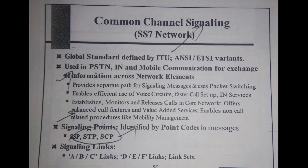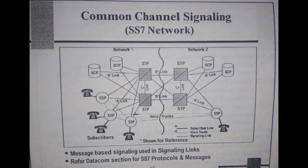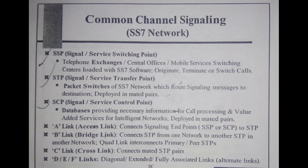In the diagram, the signaling points are SSP, STP, and SCP, along with signaling links A, B, C, D, E, and F. SSP is the Service Switching Point — it could be a telephone exchange, central office, mobile services switching center, or MSC in mobile, loaded with SS7 software. It is used to originate, terminate, or switch calls. STP, the Service Transfer Point, acts as packet switches for the SS7 network, with the basic function of routing signaling messages to their destination. SCP, the Service Control Point, is a database that provides necessary information for call processing and value-added services for intelligent networks.